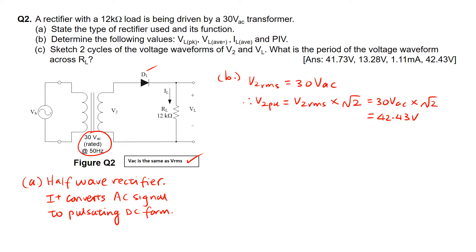We can now use V2 peak to calculate VL peak. VL peak equals V2 peak minus the voltage drop across diode D1. Diode D1 is forward biased with a voltage of 0.7V. Hence, VL peak = 42.43V − 0.7V = 41.73V.